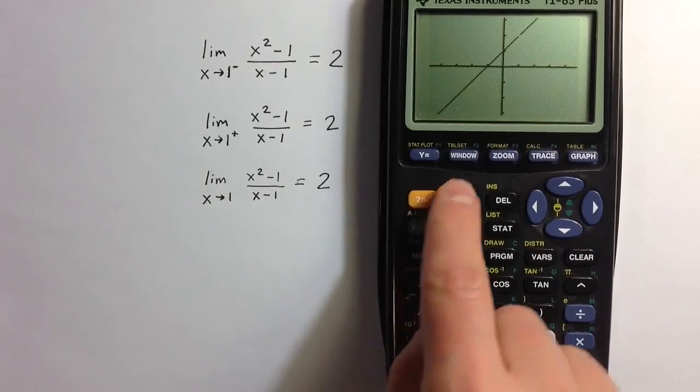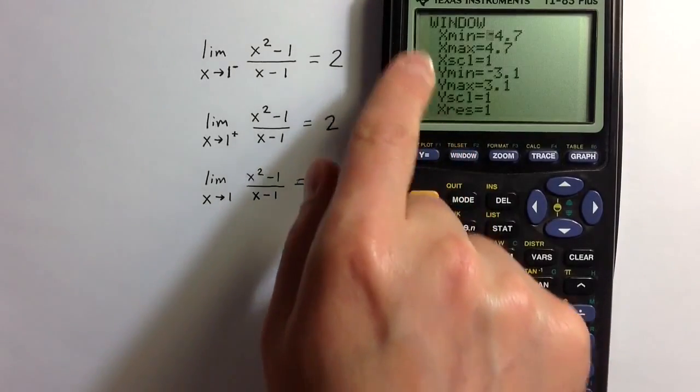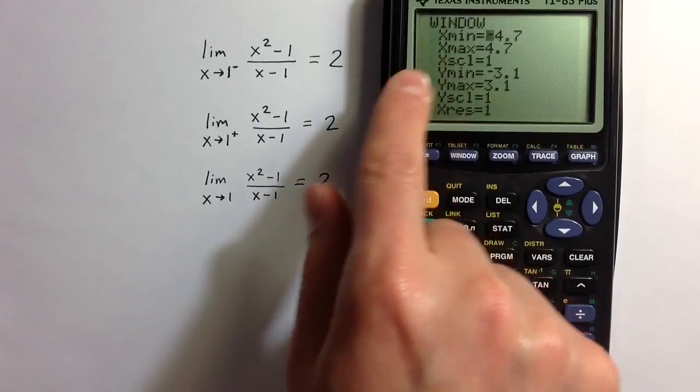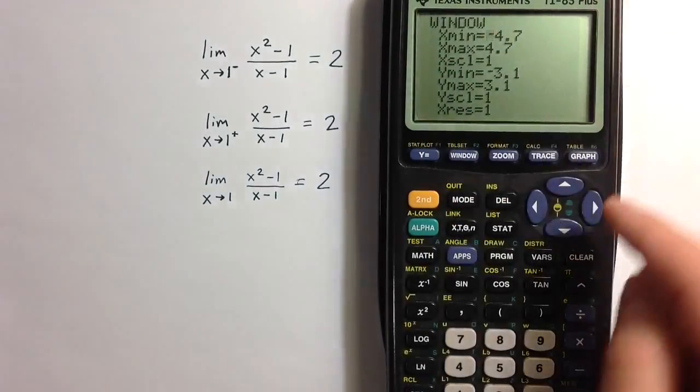And now if we look at the window, the settings have changed a little bit. So the window goes from negative 4.7 to 4.7, negative 3.1 to 3.1.